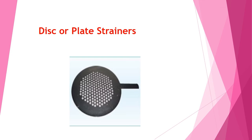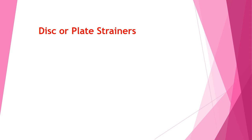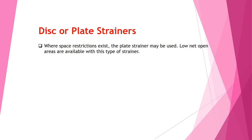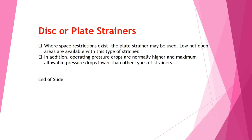The third type is the disc or plate strainers. Where a space restriction exists, the plate strainer must be used. Low net open areas are available with this type of strainer. In addition, operating pressure drops are normally higher and maximum allowable pressure drops lower than other types of strainer.